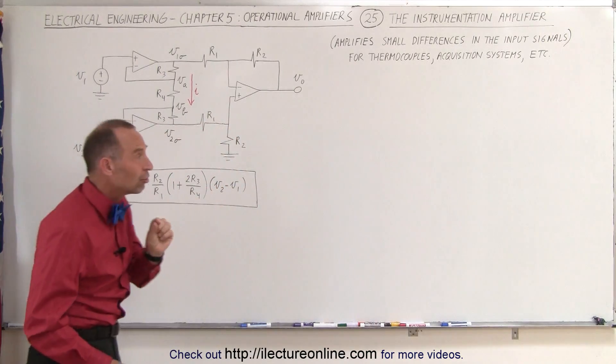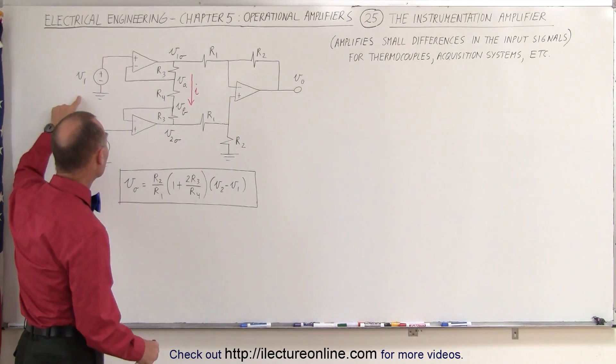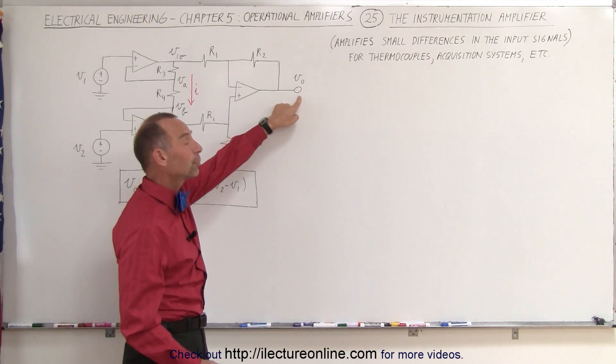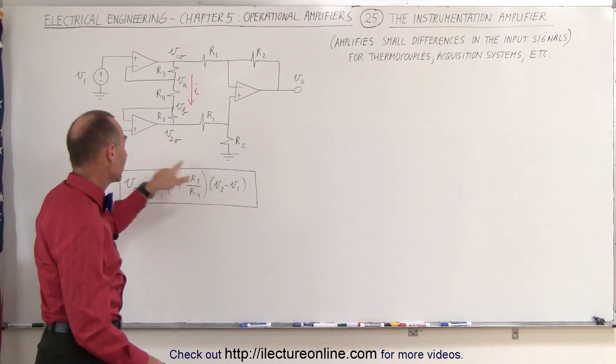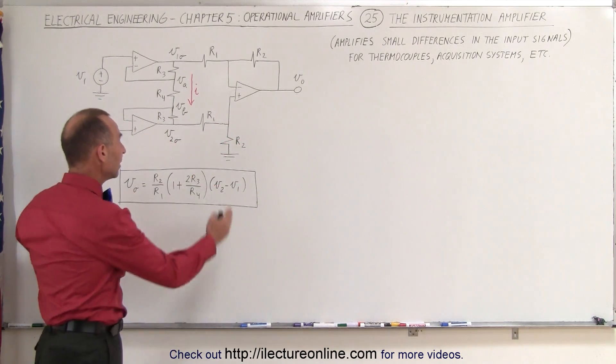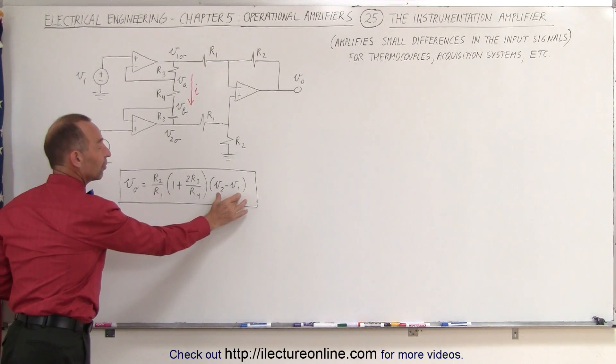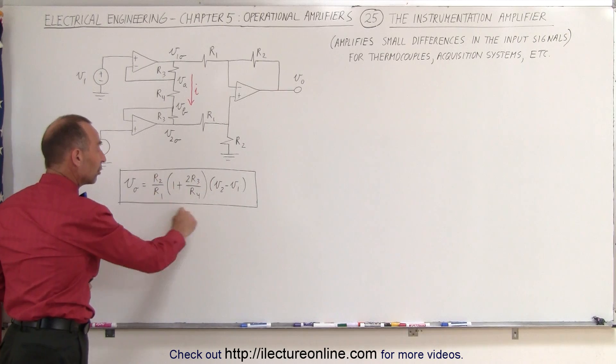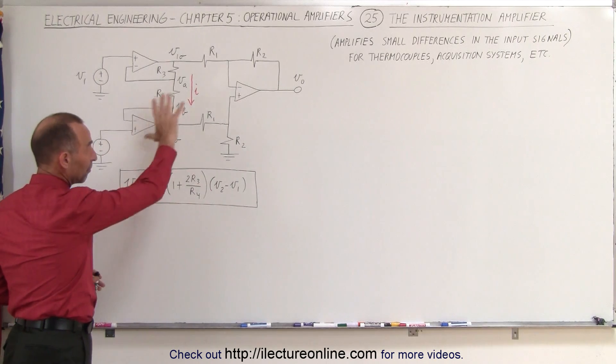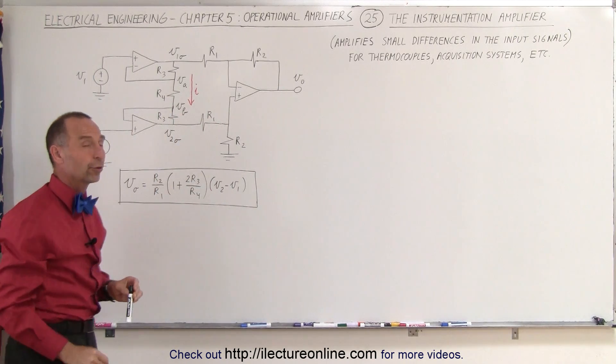Very small changes, very small differences in the input will then have a very large output right here, of course depending upon how big your gain is. Here's the equation that describes the output voltage relative to the difference of the two inputs multiplied times its gain. Depends of course how you choose the values for your resistors.